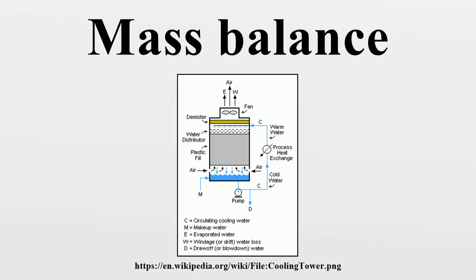Mass feedback: mass balances can be performed across systems which have cyclic flows. In these systems, output streams are fed back into the input of a unit, often for further reprocessing. Such systems are common in grinding circuits, where materials are crushed then screened to only allow a particular size of particle out of the circuit and the larger particles are returned to the grinder.